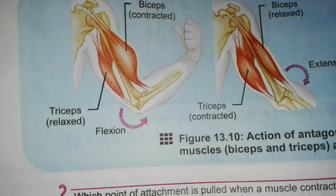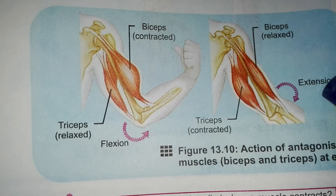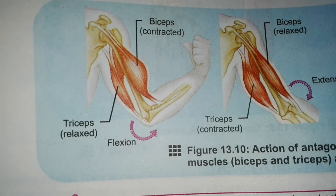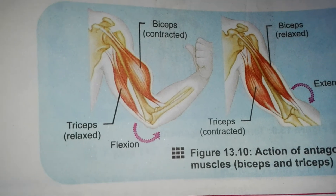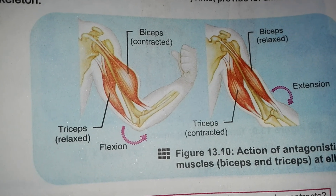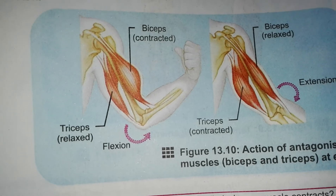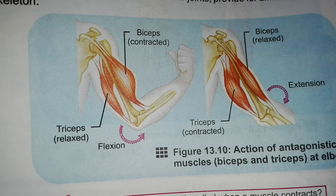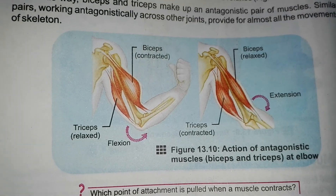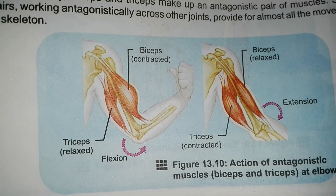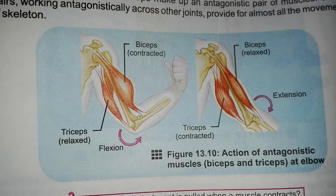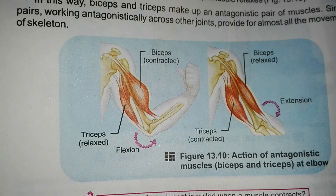Biceps and triceps make up an antagonistic pair of muscles — one contracts while the other relaxes. This antagonistic action produces movement of the skeleton. This is an important topic; you need to learn contraction and relaxation and be able to draw the diagram. Thank you for listening carefully. Allah Hafiz.